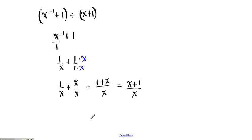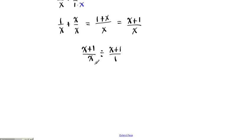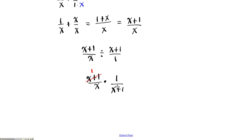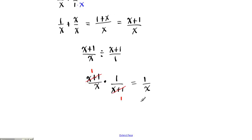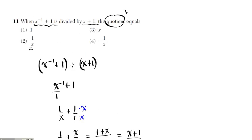Now the problem has been modified. We're going to be doing x plus 1 over x, divided by x plus 1. How do we divide? I can express this as a fraction: x plus 1 over 1. Division is the same as multiplying by the reciprocal. So I write this as x plus 1 over x times the reciprocal, which is 1 over x plus 1. Can I reduce? Absolutely — x plus 1 cancels, and you're left with 1 over x. That's your final answer. The answer to question 11 is option 2.